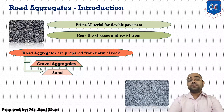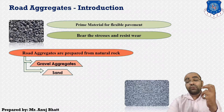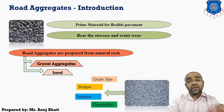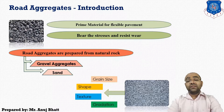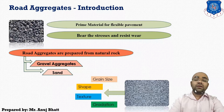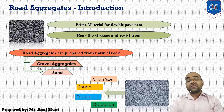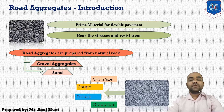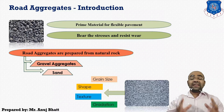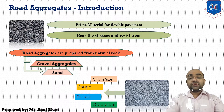Aggregates are specified based on a few properties: grain size, the shape of the aggregate, the texture of the aggregate, and most importantly, the gradation of aggregates. Aggregate size is measured by sieve analysis, by sieving aggregates through various square sieves of successively decreasing size. The required aggregate sizes are chosen to fulfill the desired gradation. Based on size, aggregates are classified into a few categories.